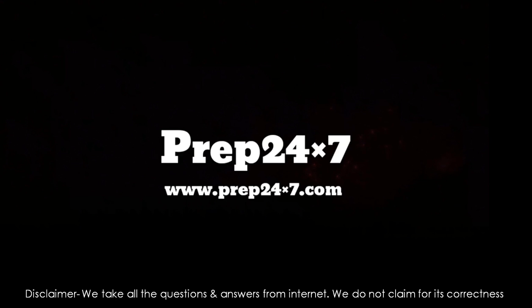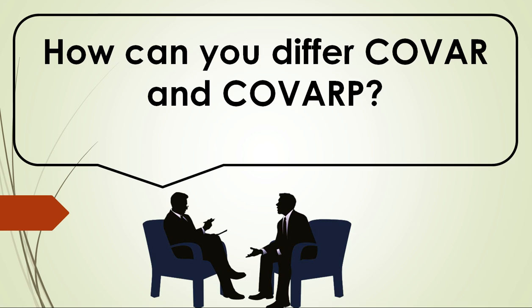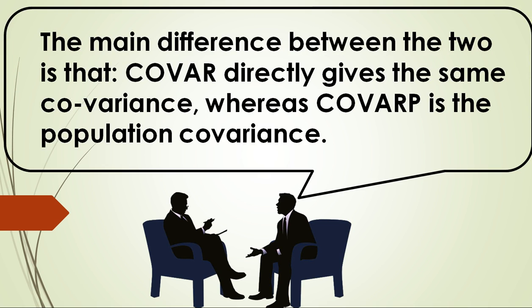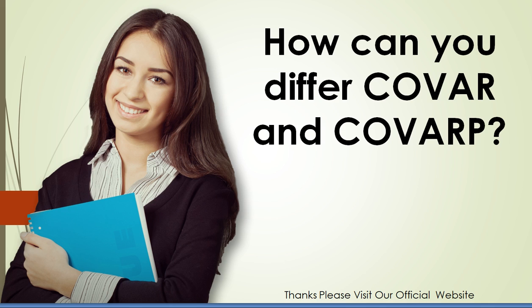How can you differentiate cov and covrap? The main difference between the two is that cov directly gives the sample covariance, whereas covrap gives the population covariance.